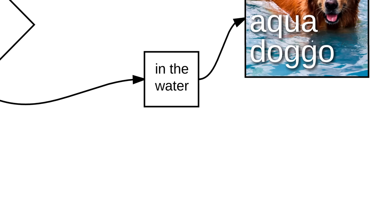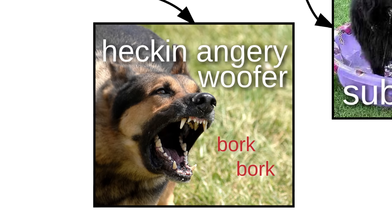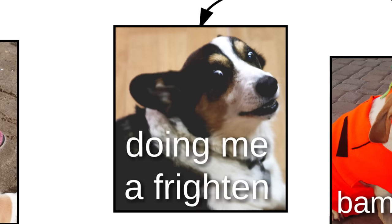Doggos do things. A doggo in the water is an aqua doggo. A woofer in the water is a subwoofer. Lots of bork-bork snarl makes for a heckin' angry woofer. A doggo in a costume is bamboozled.